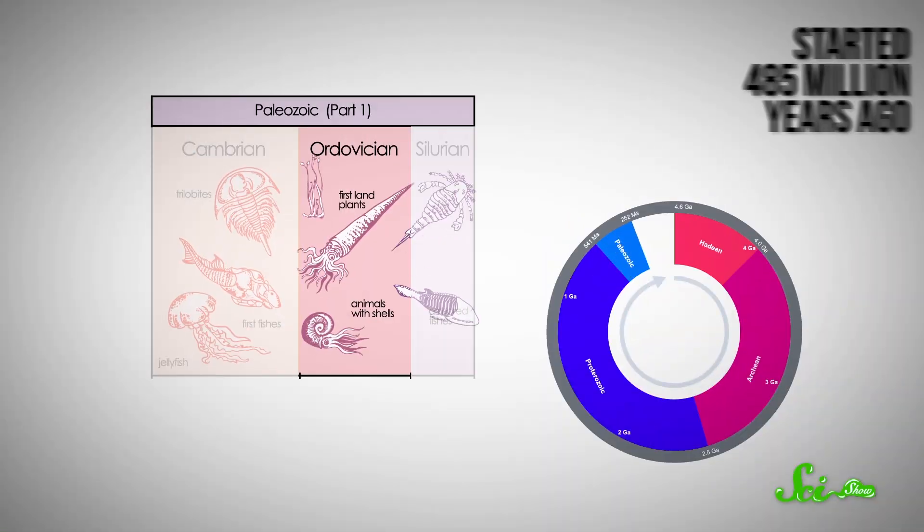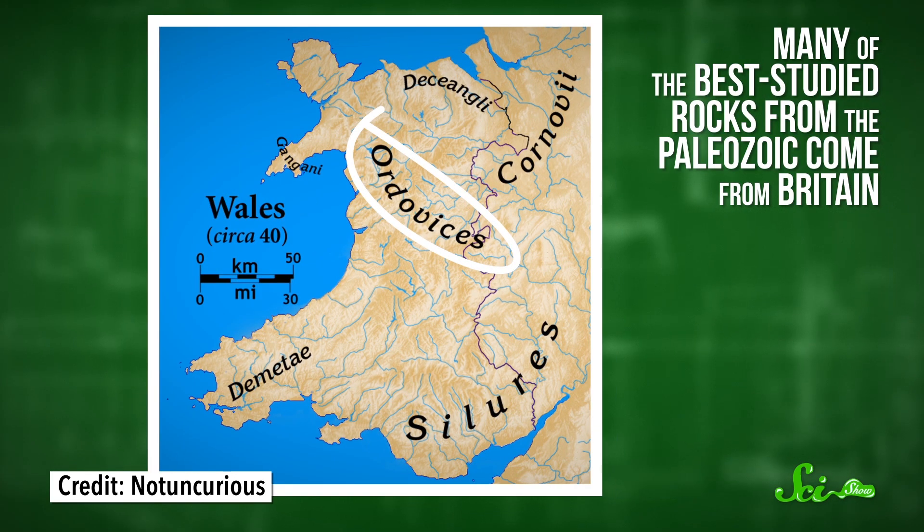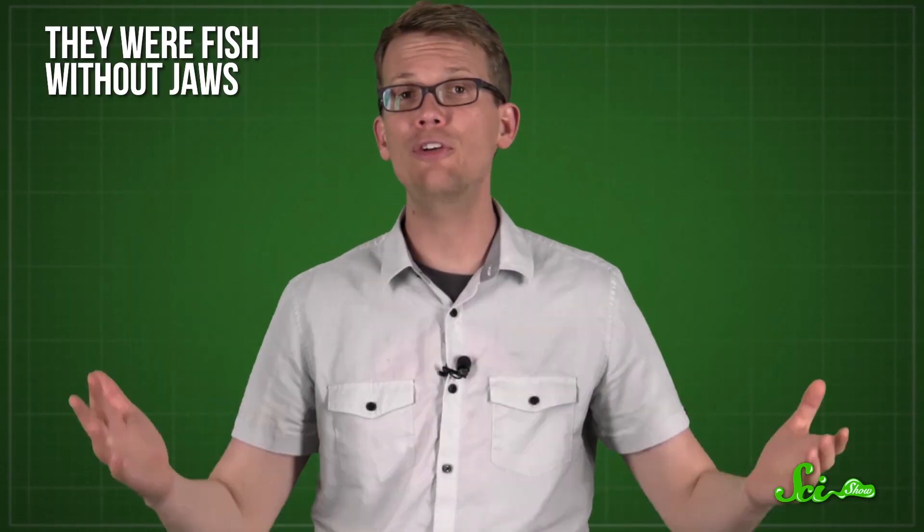The second period of the Paleozoic era was the Ordovician, which started 485 million years ago. This name comes from a Celtic tribe, since many of the best-studied rocks from the Paleozoic come from Britain. The Ordovician was when vertebrates first appeared. They were fish without jaws.